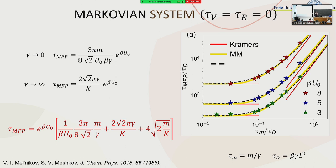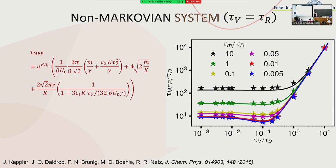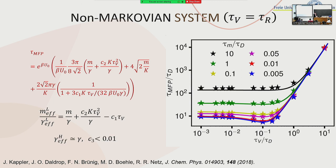Starting from the Markovian system, we move to the non-Markovian system by substituting the normal mass and friction with our new effective mass and effective friction. We obtain a formula that, since we are still at equilibrium, has tau_v equal to tau_r, so only one memory time. The beta coefficient and temperature do not change. We observe that this formula fits very well with our data. The effective friction in the high friction limit is fitted via the third parameter C3, which turns out to have a very small value.